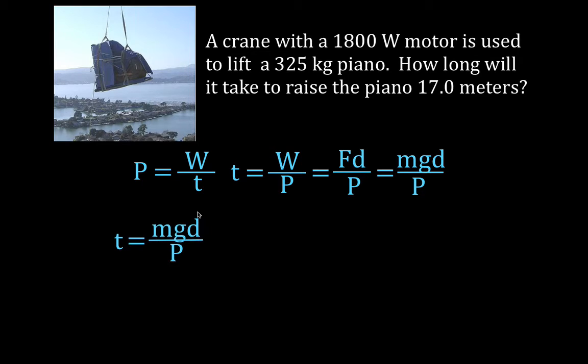So we get that the time it takes is the mass of the object times the acceleration due to gravity times the distance divided by the power output of the motor. And we can do that simply by taking 325 times 9.81 times 17,